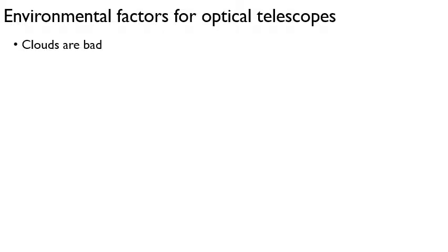Clouds are bad, right? If you have a telescope on the ground, clouds mean you can't look at the sky. So you need to find a place that is not cloudy. Typically this favors somewhere tropical or desert-like.